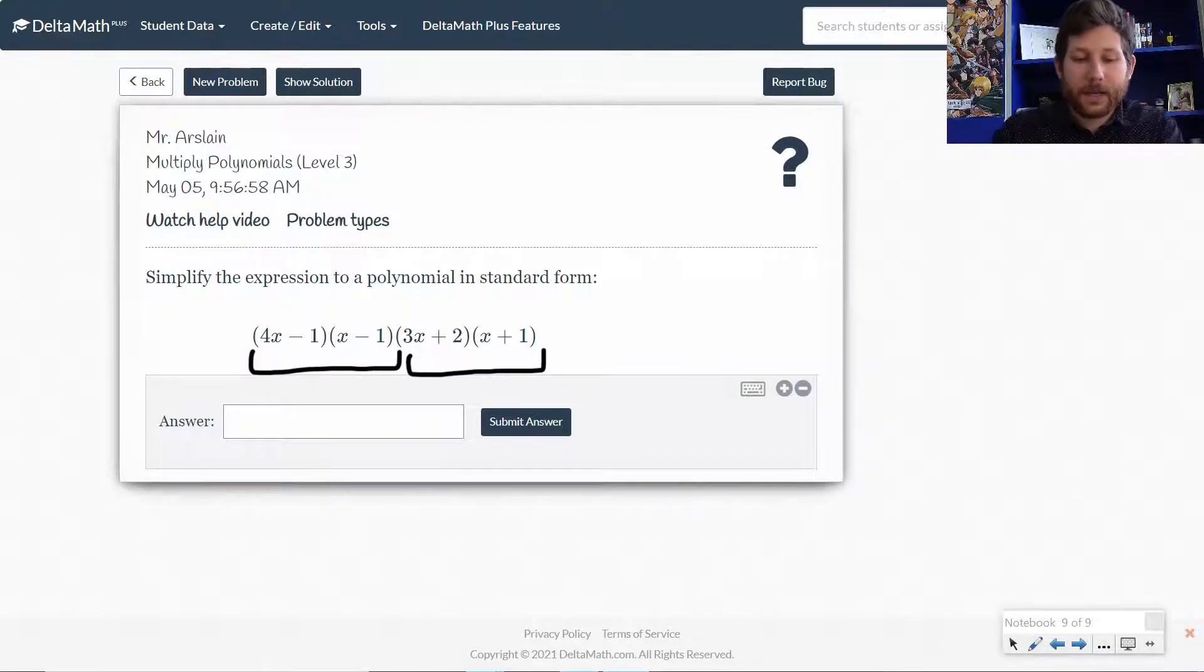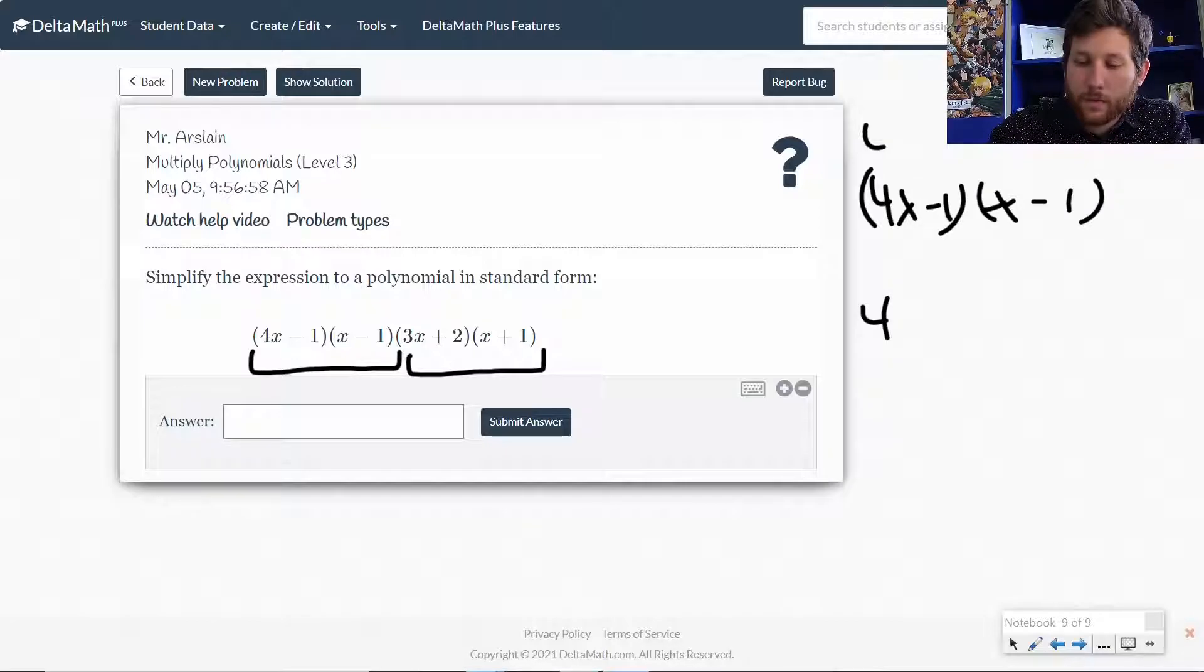That would get me two sets of trinomials, and then I'd multiply the trinomials. Let me kind of show you what I mean. So I'd do 4x minus 1 times x minus 1. So if I multiply that together,